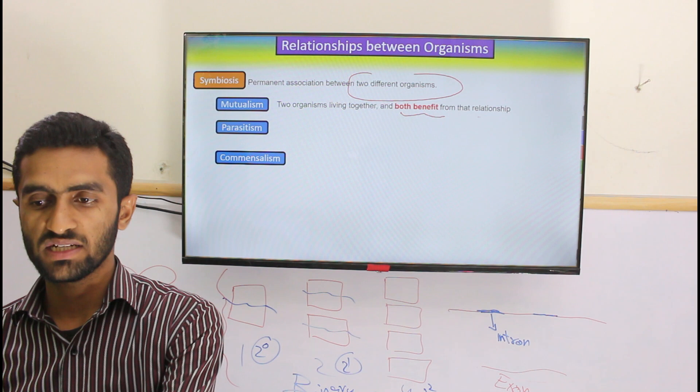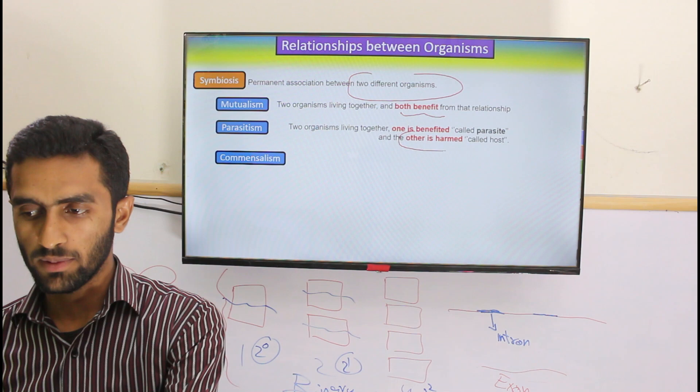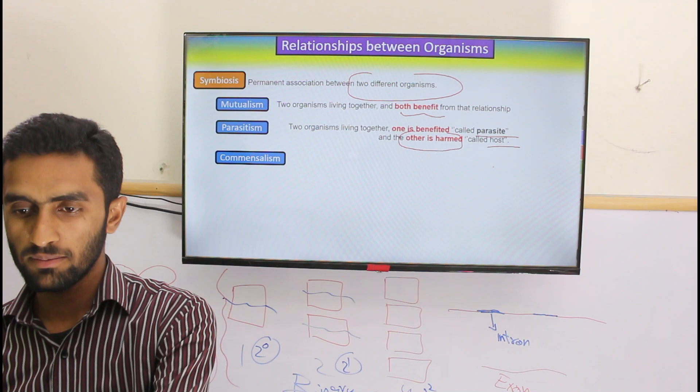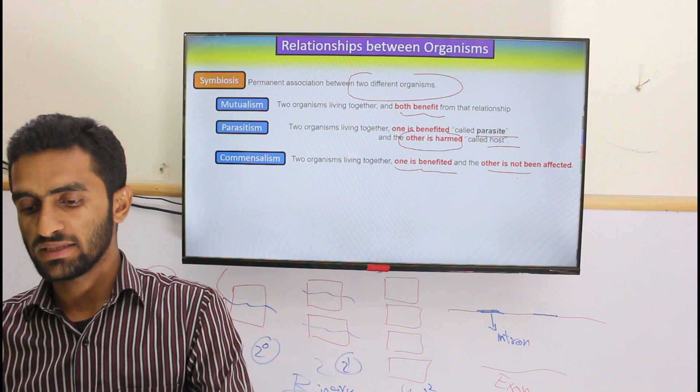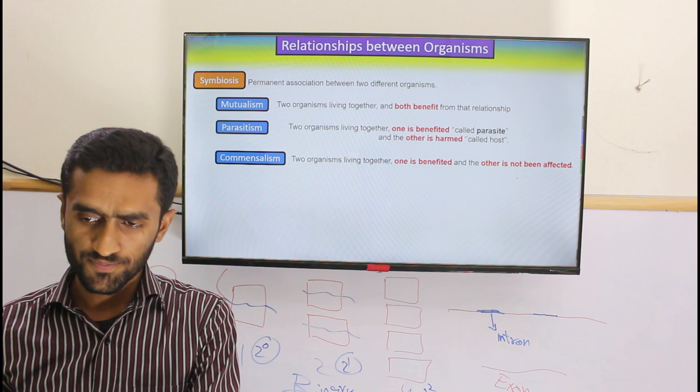Mutualism is when both organisms are benefited. Parasitism is when one is benefited while the other is harmed — the host is always harmed and the parasite is the one benefiting. Commensalism is where one is benefited but the other is not affected. These describe the relationship between organisms and our body.